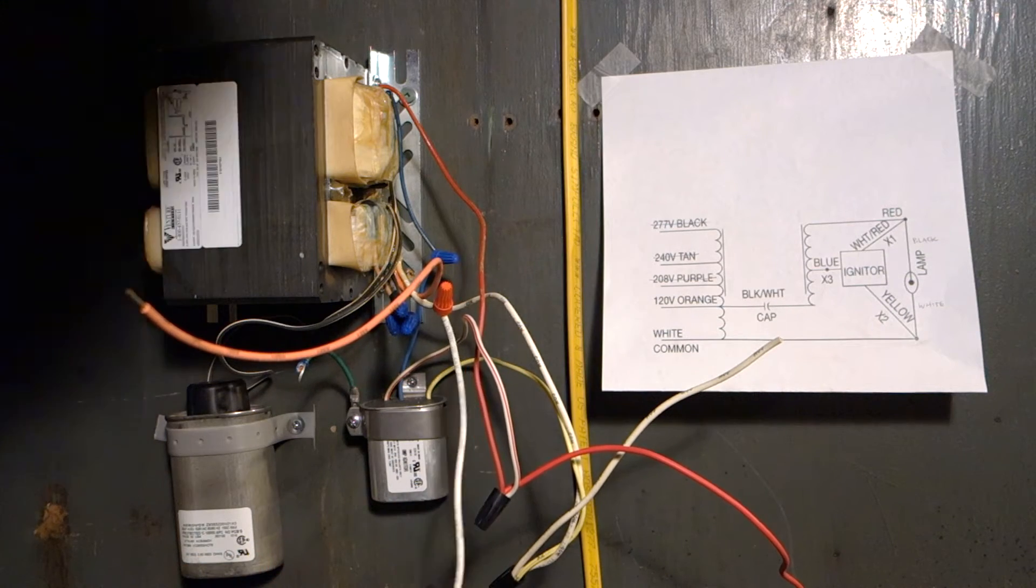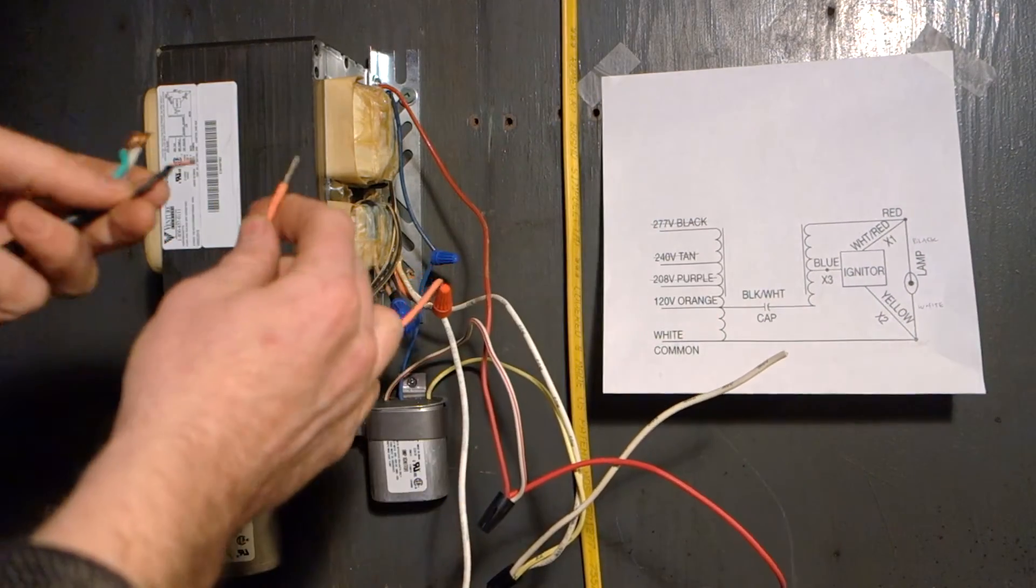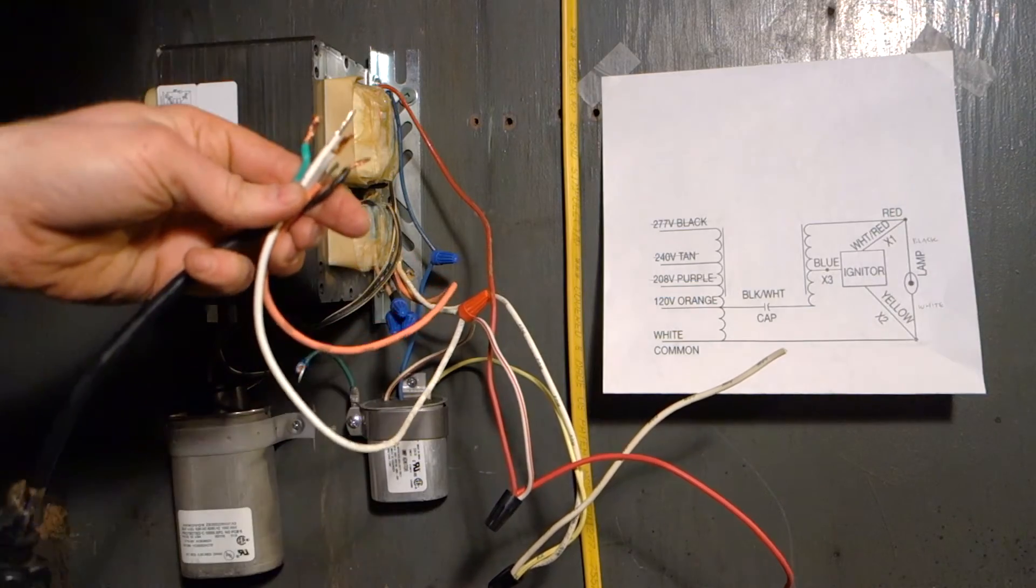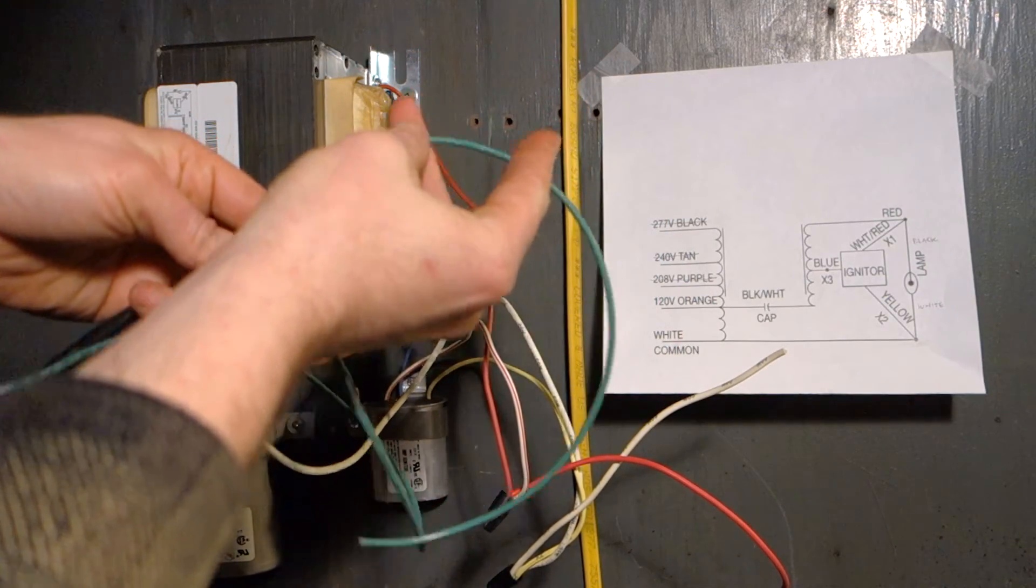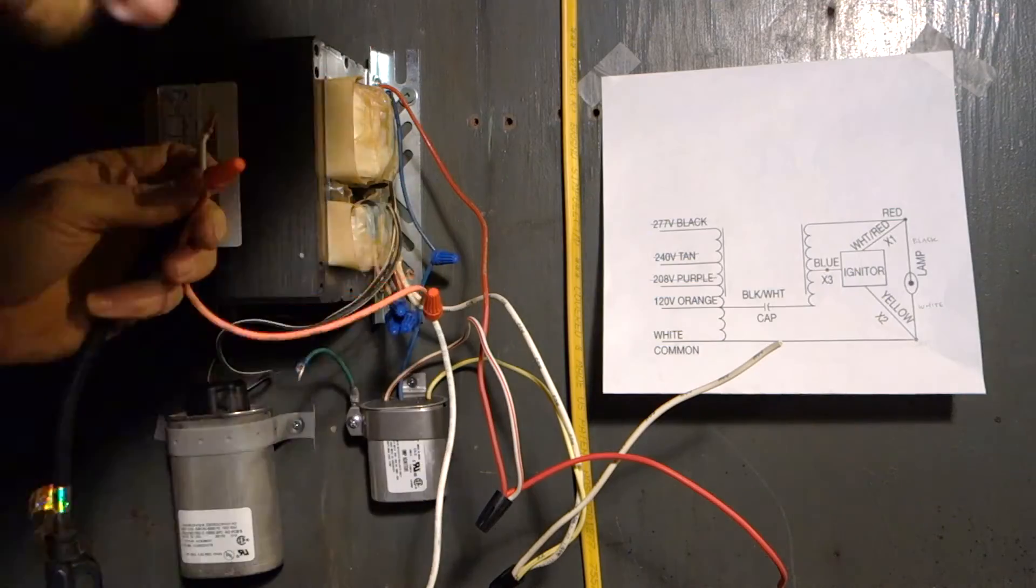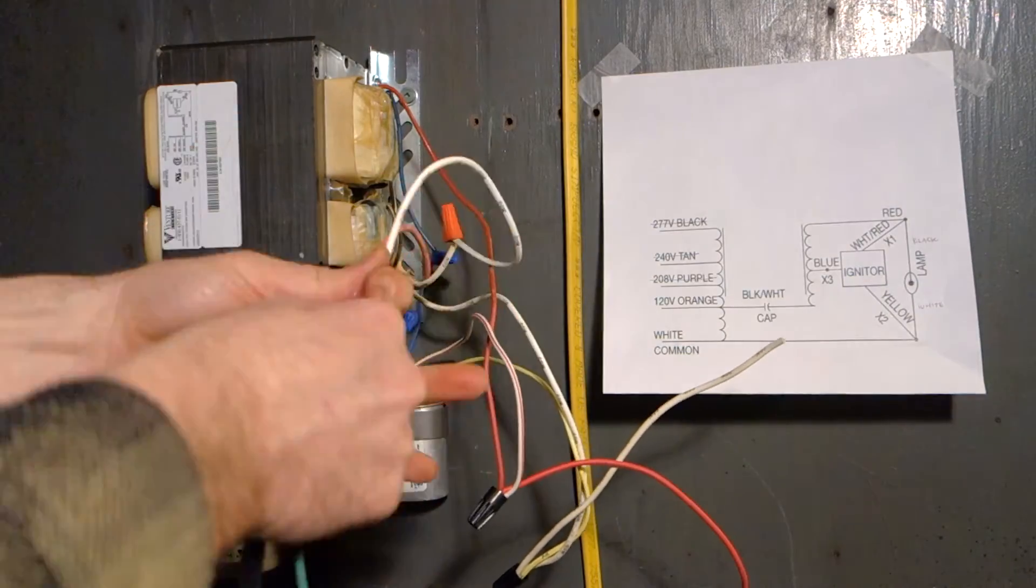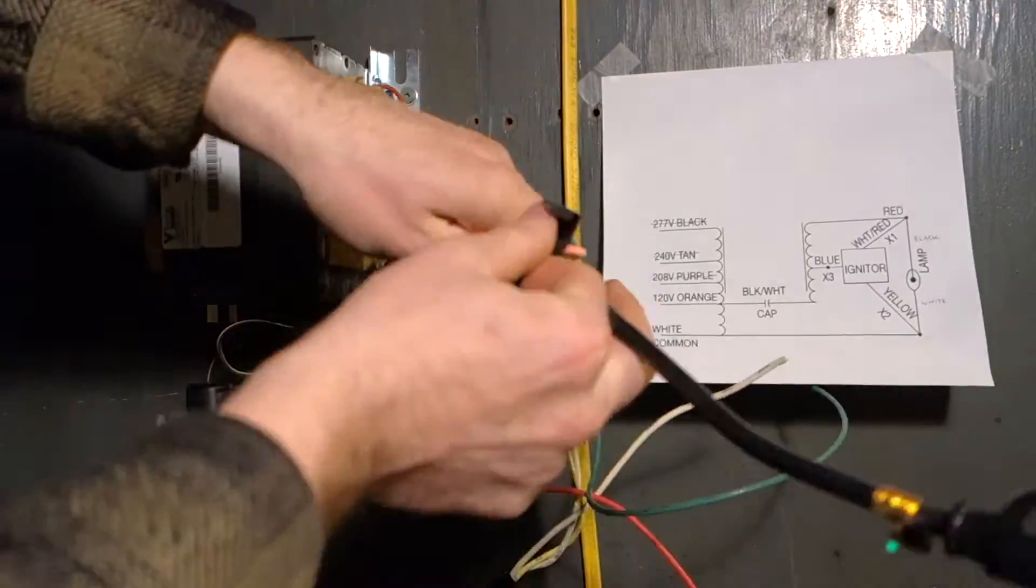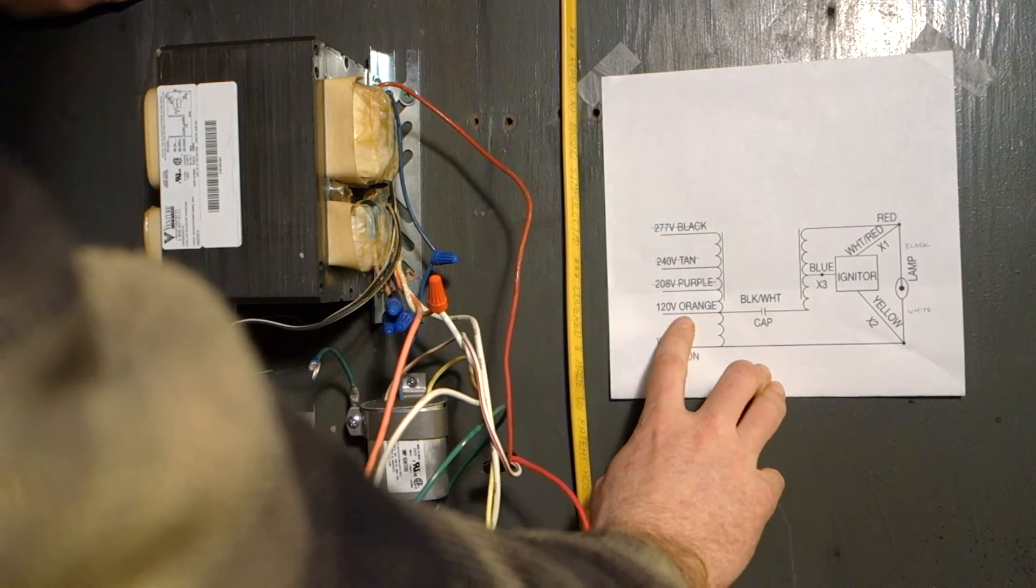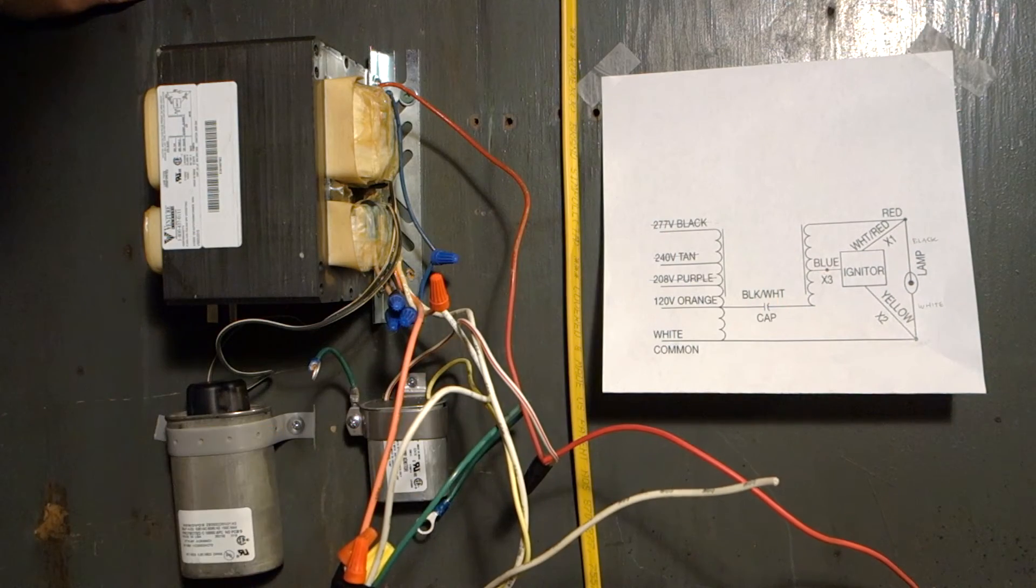So to start, we'll connect the 120 volt cord, and how that'll do is we'll start with this 120 volt orange that will connect to the hot, the white common here, and then we'll run a small length of cord to ground it. So that takes care of the 120 volt cord, and then the ground will connect in a minute.